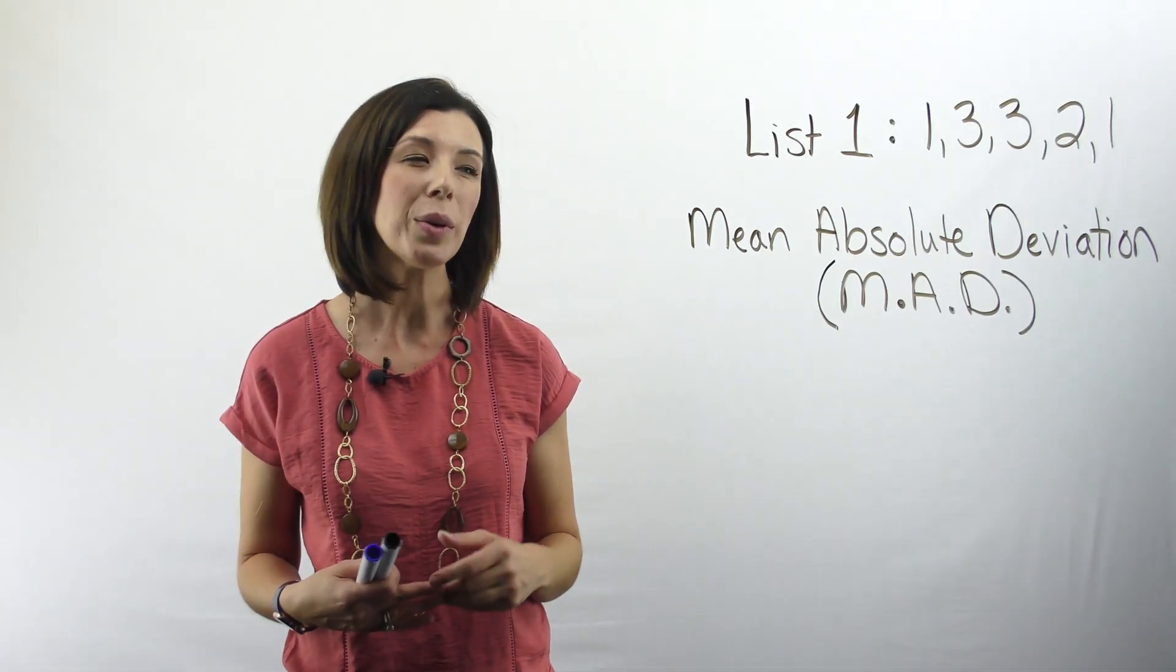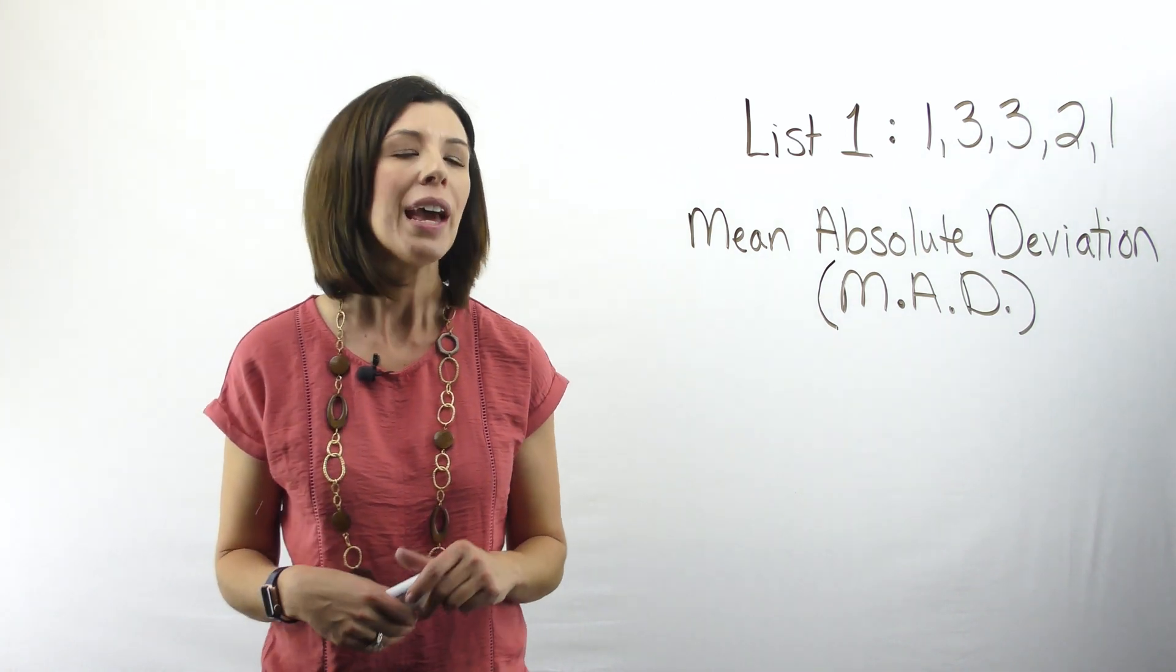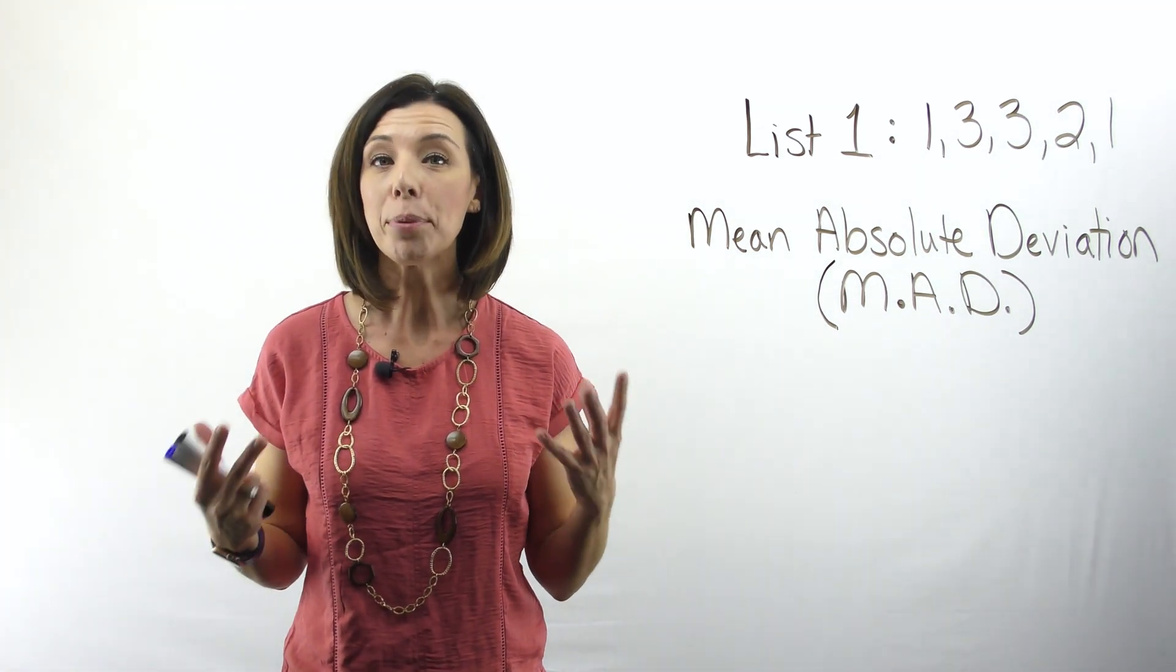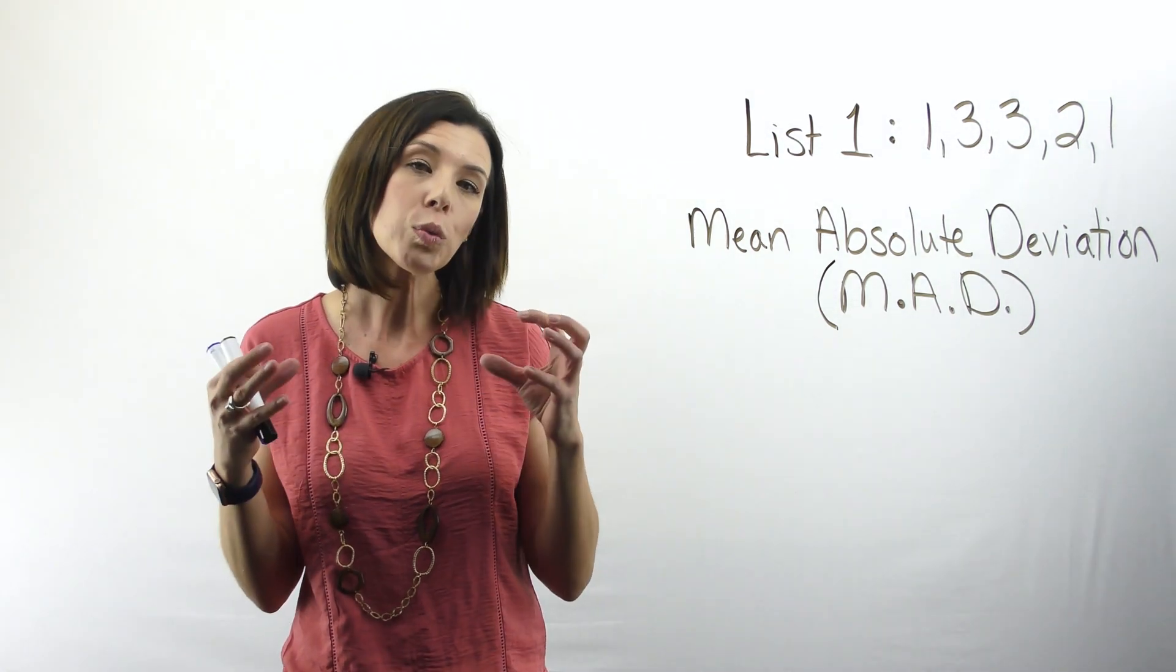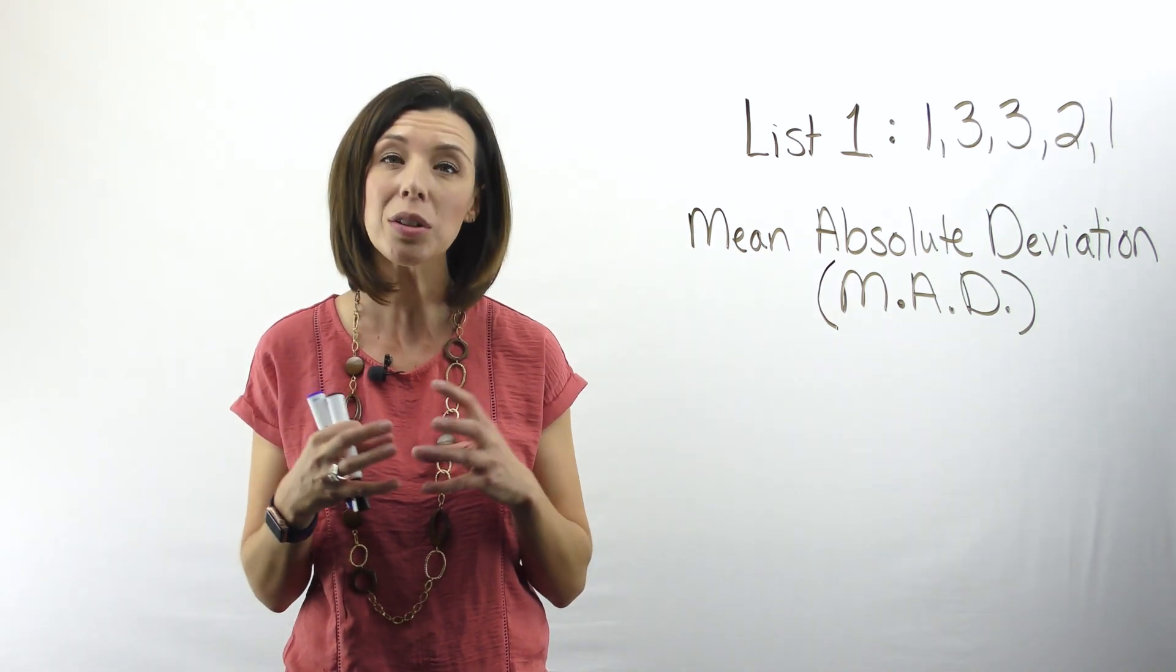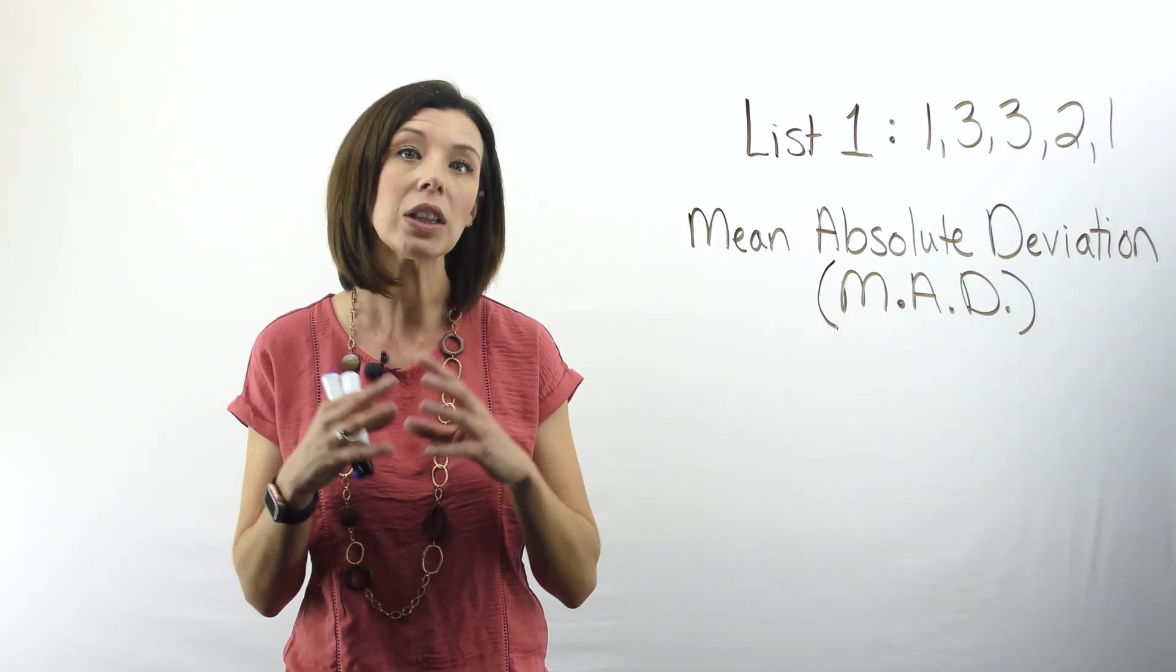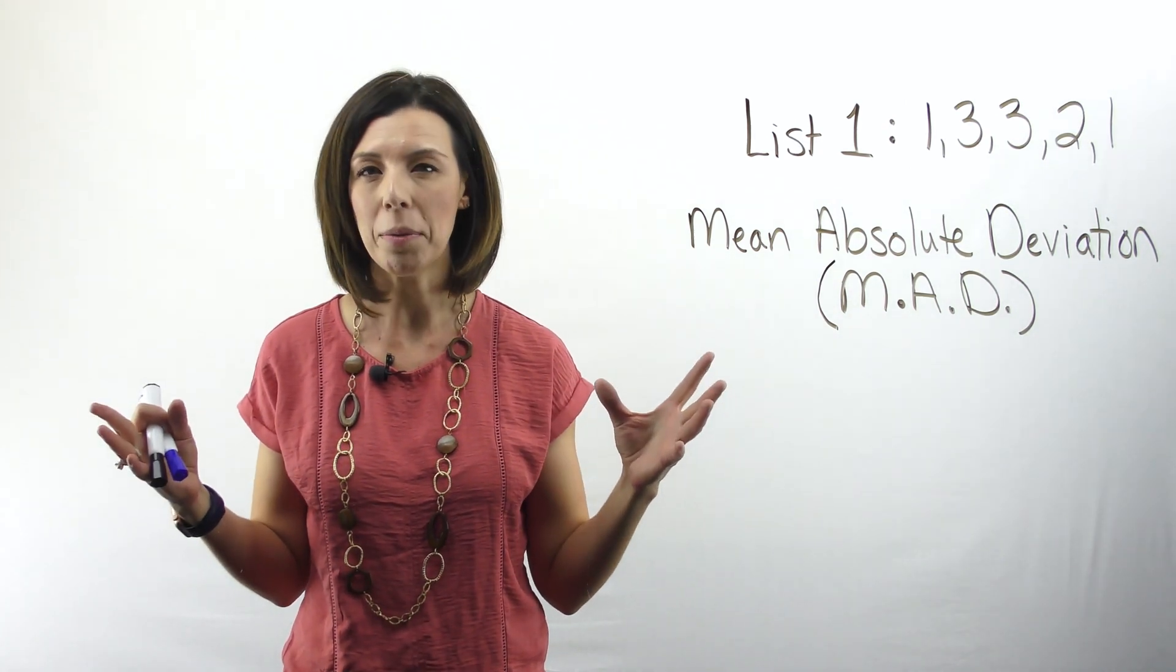Now let's think about how we would interpret the MAD, or mean absolute deviation. The MAD tells us, by the way, this is a precursor for variance. So if we have a really small MAD, it tells us that my data is really clustered around the mean. Versus if we have a really large MAD, that tells me that my data is really spread out, more spaced out from the mean.